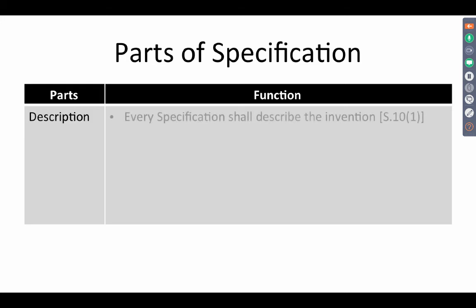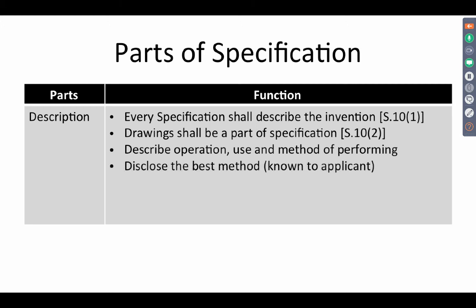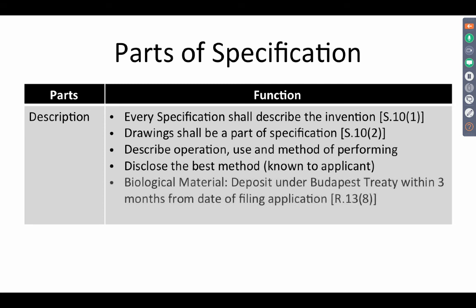The description — every specification shall describe the invention. The description part of the specification does the function of describing the invention. Drawings shall form a part of the description and shall describe the operation, use, and method of performing. Best method comes in the descriptive part — it does not come in the claim. The applicant must disclose the best method known to them. Biological material, such as a deposit under the Budapest Treaty, must be referred to in the description within 3 months from the date of filing the application. The background, prior art, problem solved, and contribution made should all come in the descriptive part.